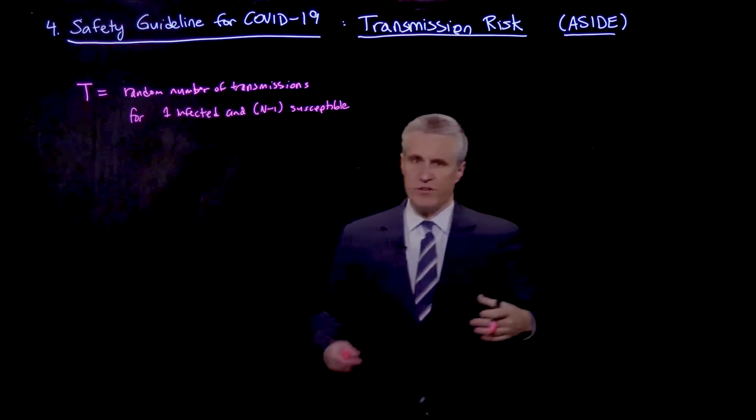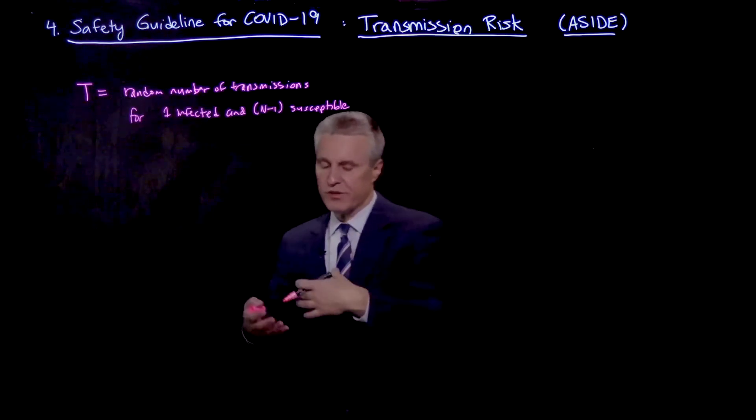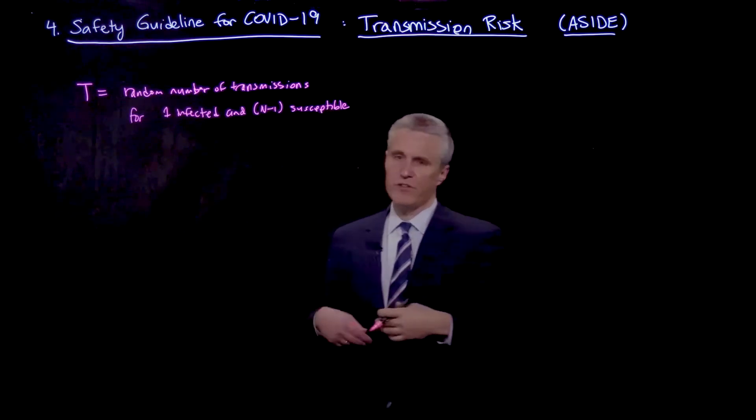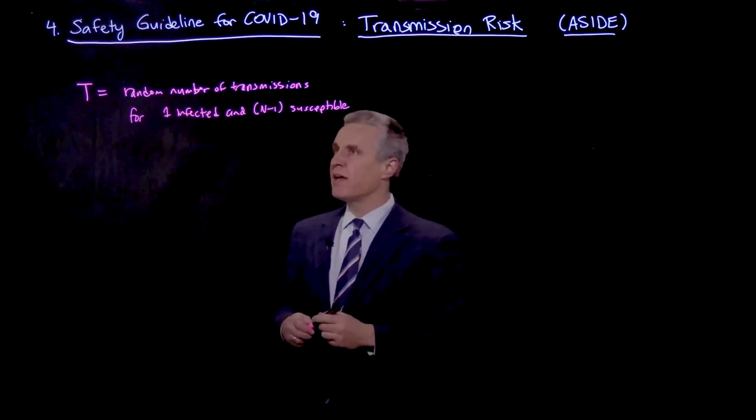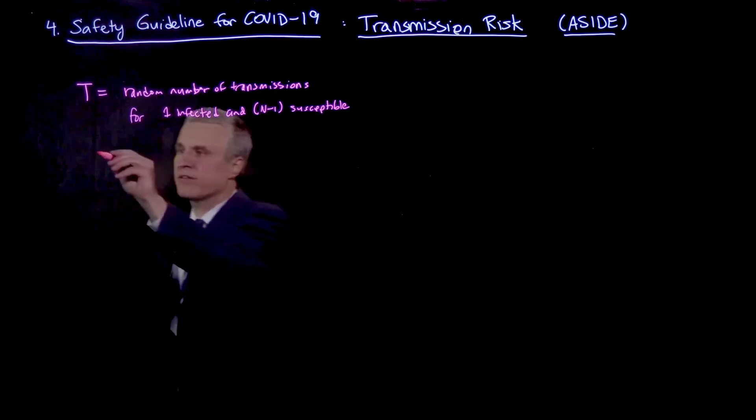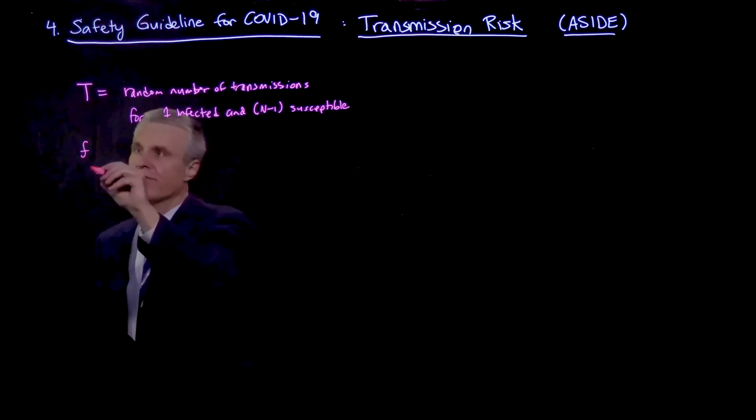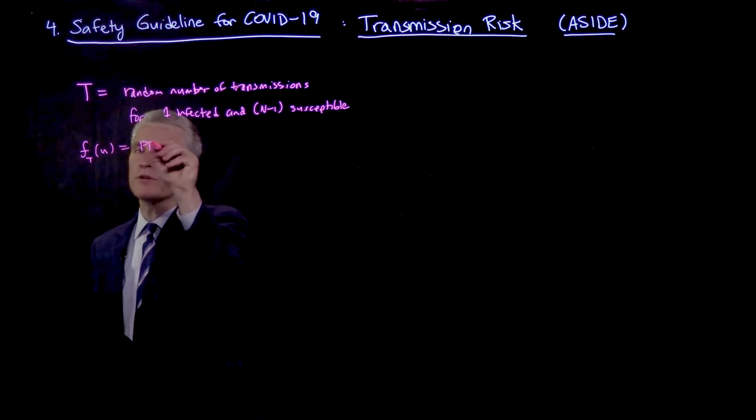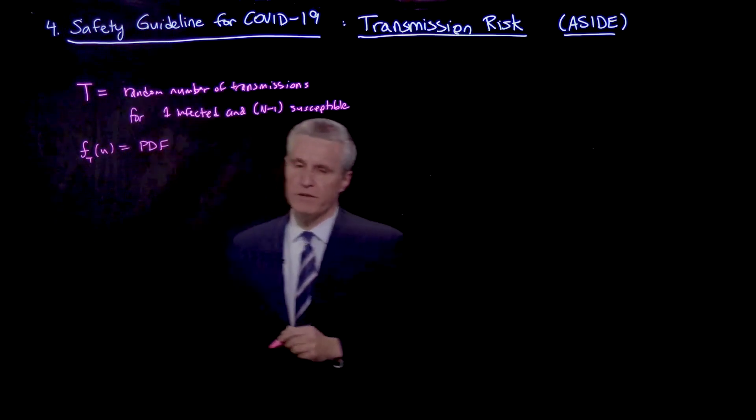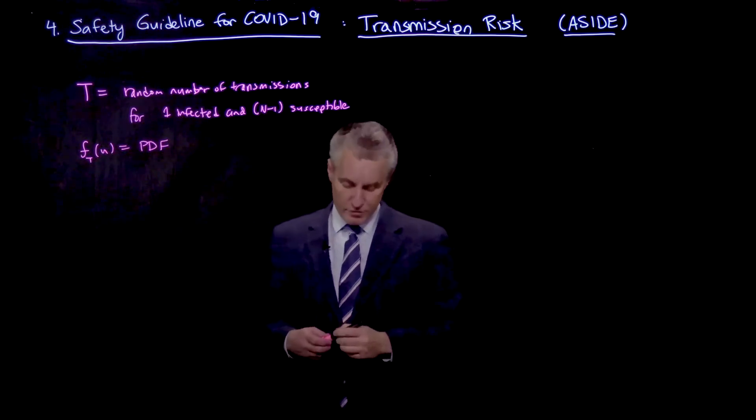So again, the situation of the reproductive number where for every person that comes in, we want to know is there going to be a transmission. Typically only one infected person would be seen. So this is a random variable, and let's let f_t of n be the probability density function that gives the probability of little n transmissions.